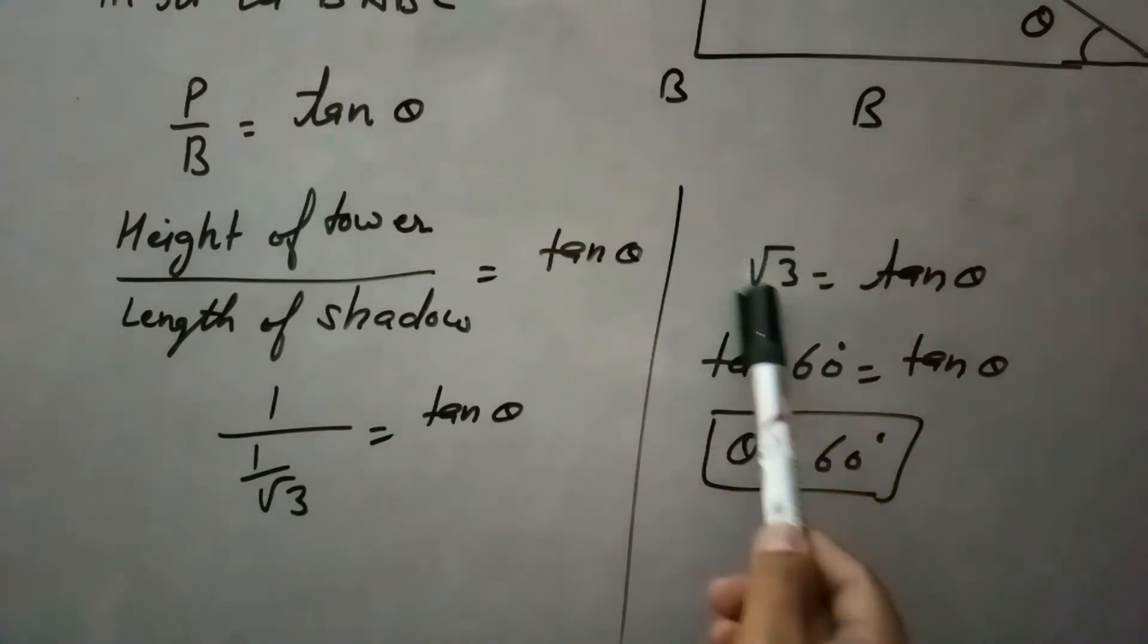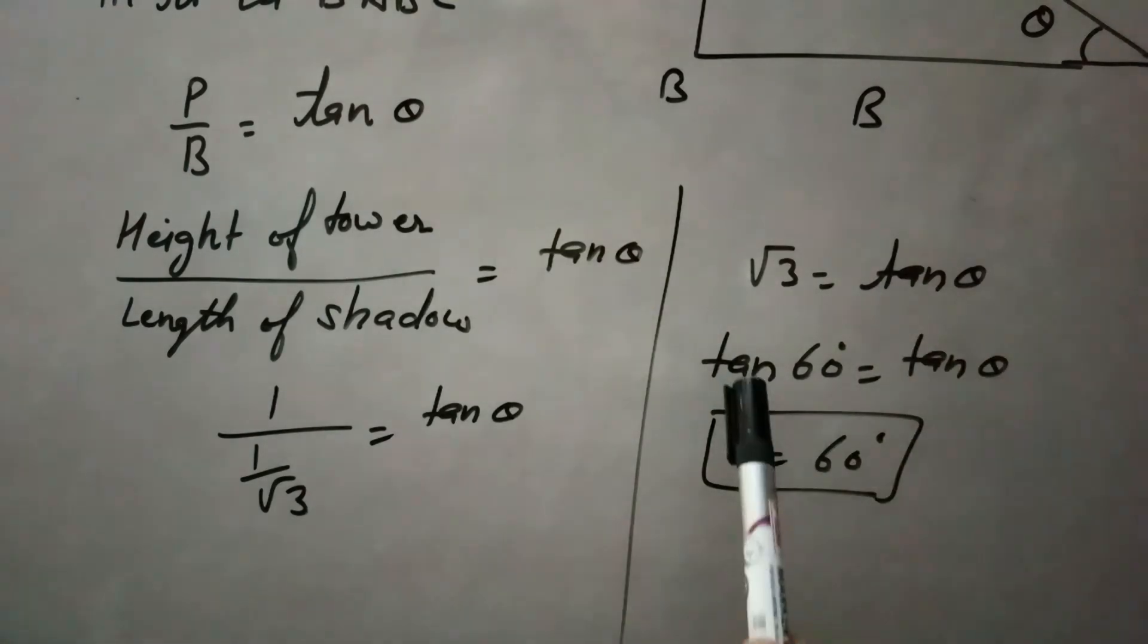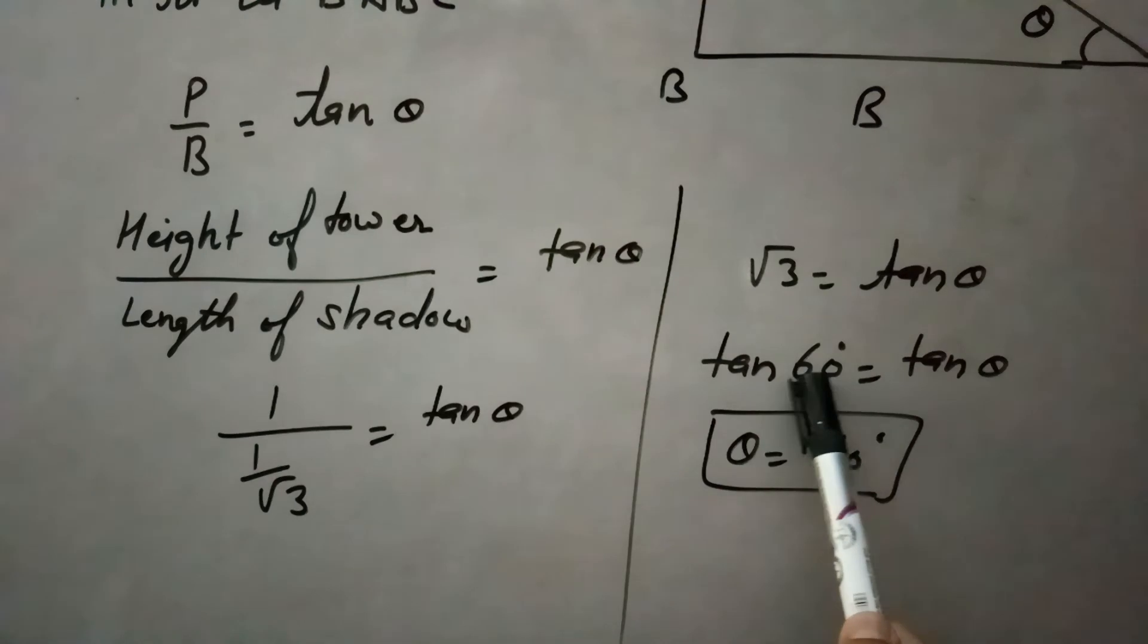Now, the value for this root 3 according to tan is tan 60. Tan 60 equals to root 3. So, this becomes tan 60 here, tan theta. While comparing these, the angle theta will be 60 degrees.